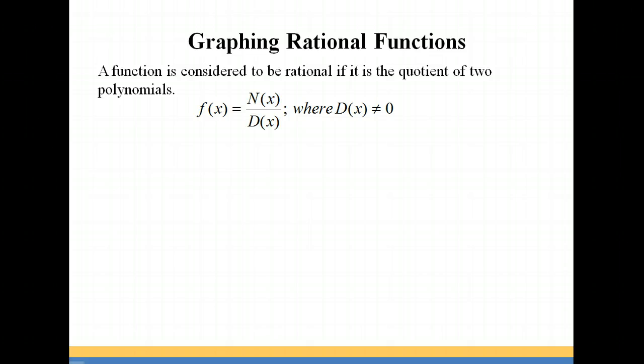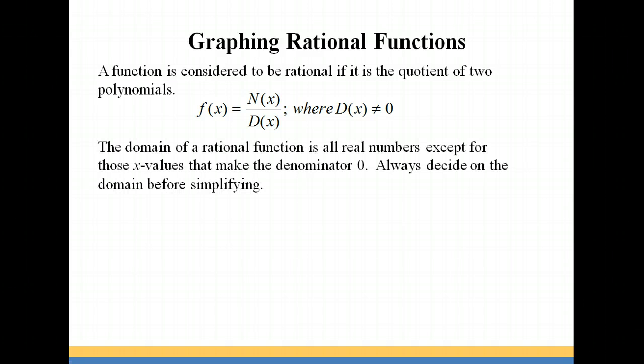A function is considered to be rational if it is the quotient of two polynomials. You have to be careful with these, because if your denominator is equal to zero, it would cause an undefined value for your function. So we want to exclude any numbers that cause our denominator to equal zero. You always want to decide on your domain before you simplify your rational function.